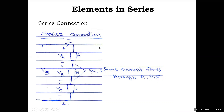Consider three elements A, B, and C connected in series. The voltages across them are Va, Vb, and Vc, and the total terminal voltage is Vs. The same current I flows through all three elements. Applying KCL confirms the same current flows through A, B, and C without violating any principle. Based on this, we will calculate equivalent values for resistors and inductors connected in series.